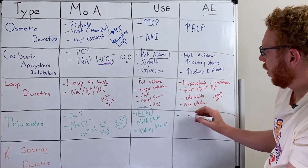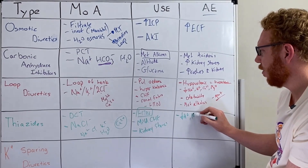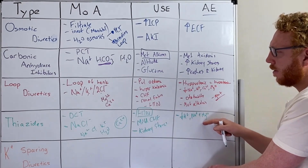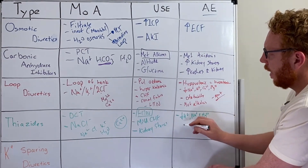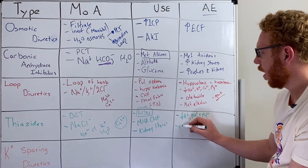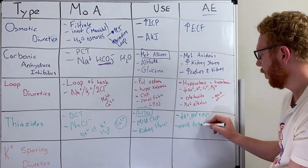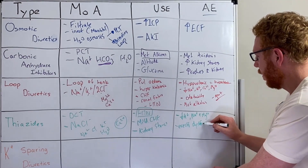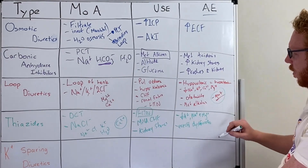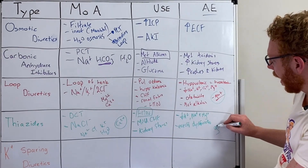The side effects: similar to the loop diuretic, you're going to have a decrease in potassium, sodium, and magnesium — so electrolyte imbalances are something to be mindful of. There also seems to be some evidence that it can lead to erectile dysfunction in men. And similarly, it's going to change the way uric acid is secreted, so it also has the effect of making gout worse.